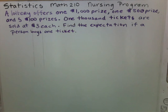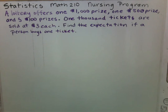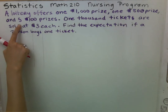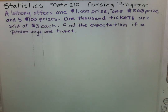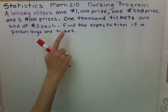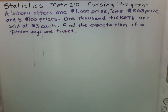Recently a former student of mine has returned because she has entered into the nursing program and is taking a statistics class. Let's take a look at one of her homework questions to prepare her for her exam next week. A lottery offers one $1000 prize, one $500 prize, and five $100 prizes. 1000 tickets are sold at three dollars each, and we're asked to find the expectation if a person buys one ticket. It's very important to read the question carefully before we decide what we're going to do.